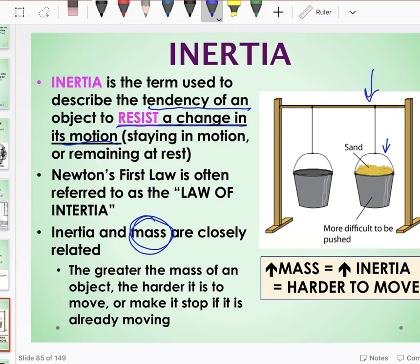If these buckets were both moving already, which bucket would be harder to stop? Again, the bucket with more mass. Because it has more mass, which means it has more inertia, which means it is harder to get it to change its already existing motion. An object at rest remains at rest, and an object in motion wants to remain in motion unless acted on by an outside force. That's Newton's first law.